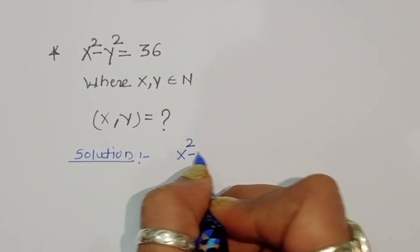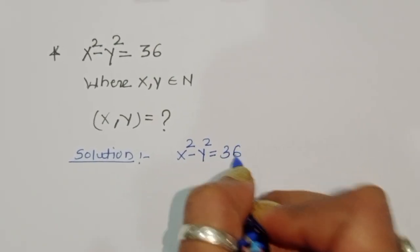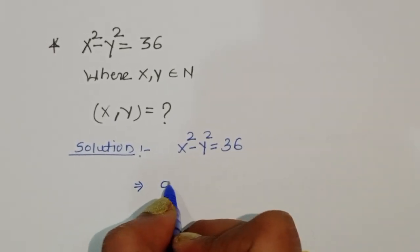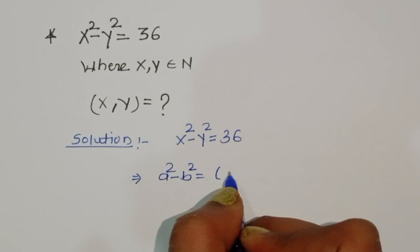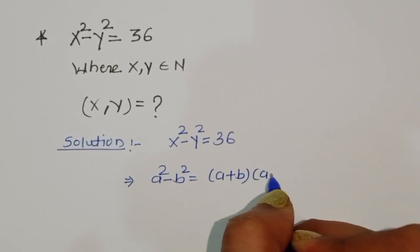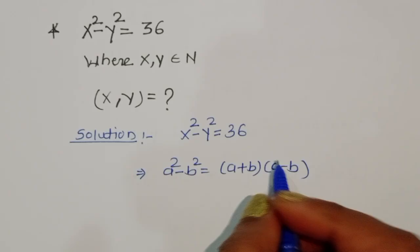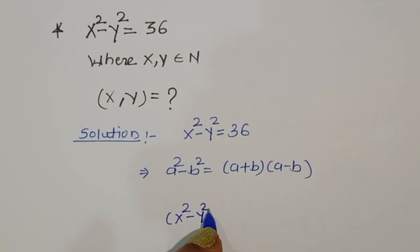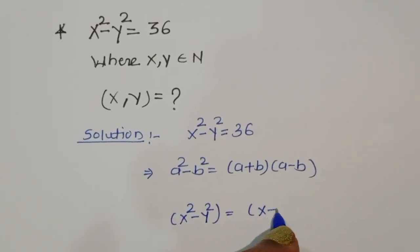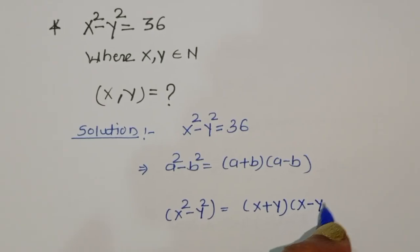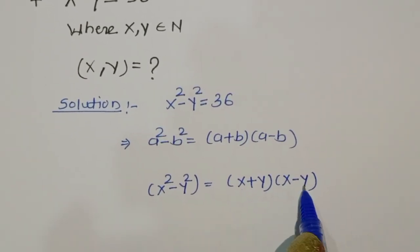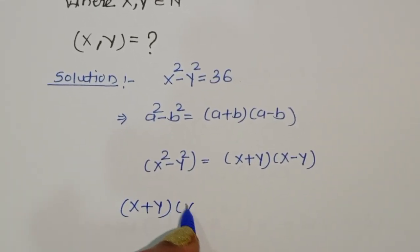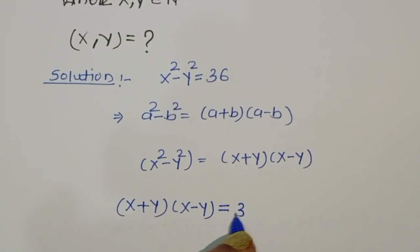The question is x² - y² = 36. We can use the formula a² - b² = (a + b)(a - b). Using this formula we can write x² - y² = (x + y)(x - y). So here (x + y)(x - y) = 36.